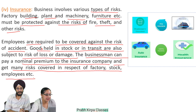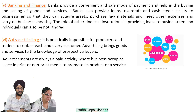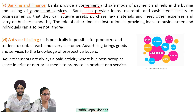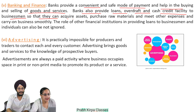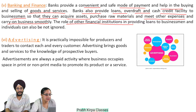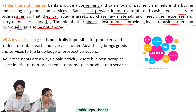For example, loss or damage being forced on Ukraine businesses due to the Russia-Ukraine war is not covered under any insurance policy. Number 5, banking and finance: banks provide a convenient and safe mode of payment and help in the buying and selling of goods and services. Banks also provide loans, overdraft, and cash credit facilities to businessmen so that they can acquire assets, purchase raw materials, and meet other expenses and carry on business smoothly. The role of other financial institutions in providing loans to businessmen and individuals cannot be ignored either.